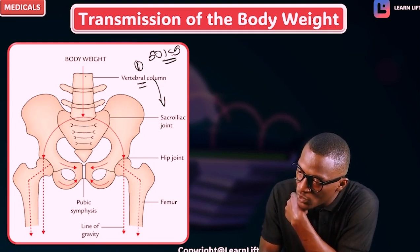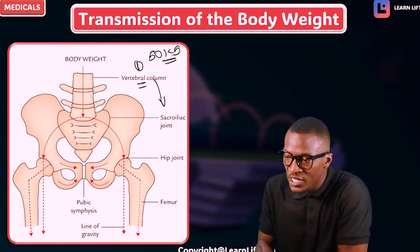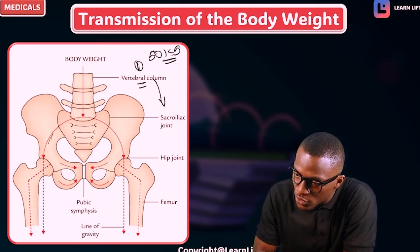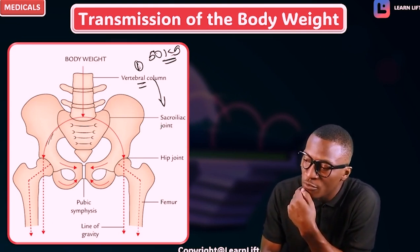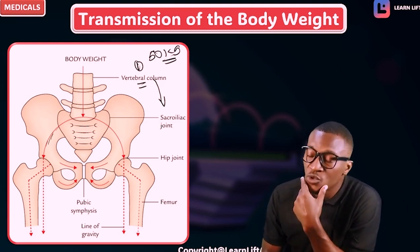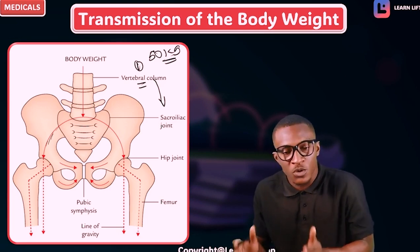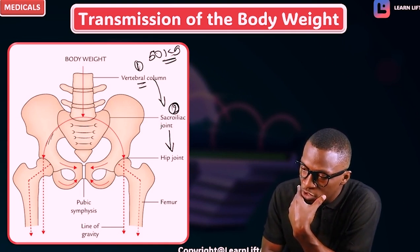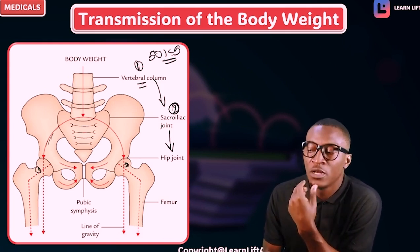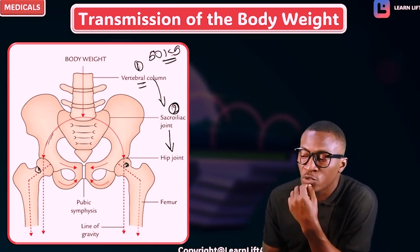From the vertebral column, the weight moves to the sacroiliac joint. The sacroiliac joint is formed between the sacrum and the ilium. The weight is coming down and moving towards the sacroiliac joint, and from there it spreads within the two limbs — going towards both lower limbs.